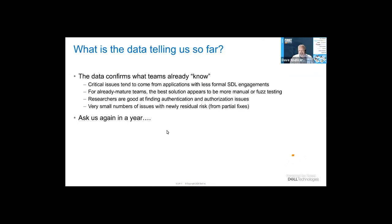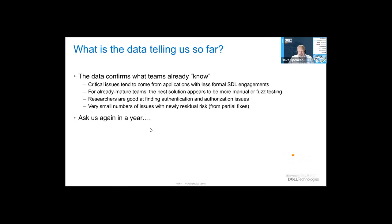What is the data telling us so far? Critical issues tend to come from application teams with less formal SDL engagement. Mature teams following all the right practices probably need to optimize with more security and fuzz testing. Researchers are good at finding authentication and authorization issues — no surprise there, as the environments researchers attack differ from those developers test in. We've found a small number of issues with newly residual risks discovered during root cause analysis. But the real message is: ask us again in a year, as we continue maturing this process.